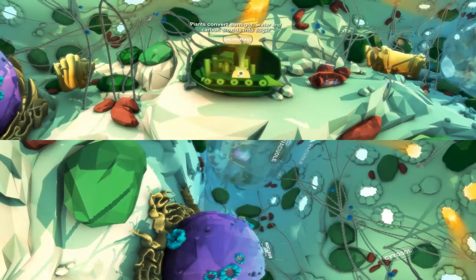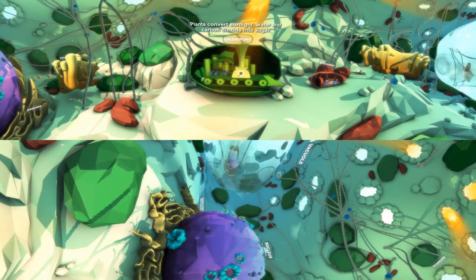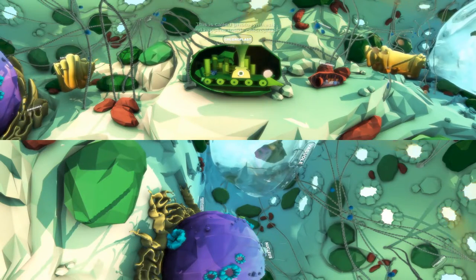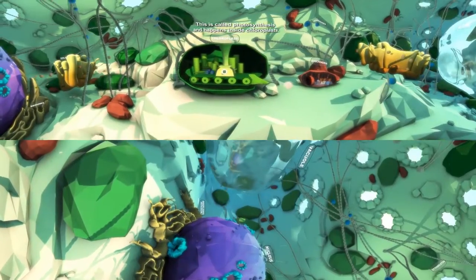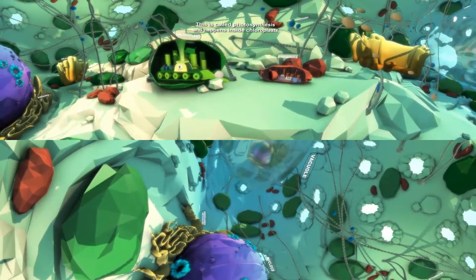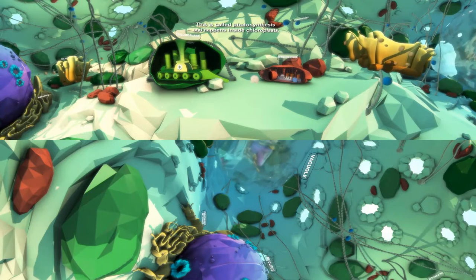Plant cells collect sunlight and use it to convert water and carbon dioxide into sugar. This process is called photosynthesis. Photosynthesis happens inside the many green chloroplasts found around a plant cell.